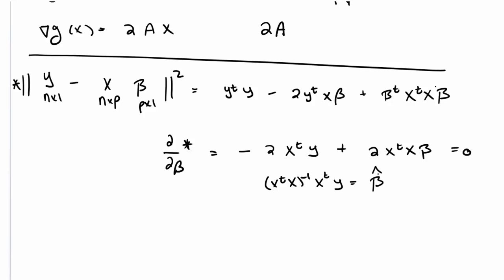Now if I want to take the second derivative, the only term that involves β is this 2X transpose X β. Using the results that we just talked about, we get 2X transpose X.